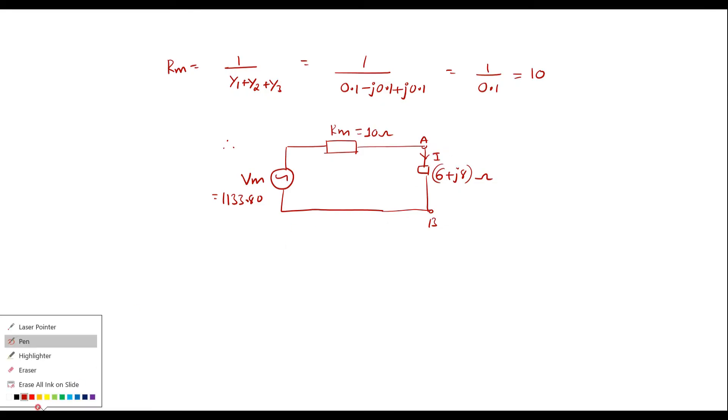Now therefore, I can write current I is equal to V by R that is Vm divided by Rm plus 6 plus J8. That is nothing but 1133.80 divided by 10 plus 6 plus J8.